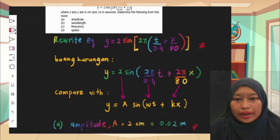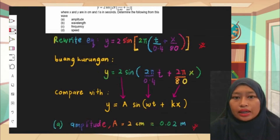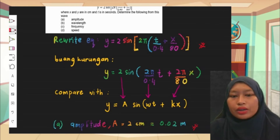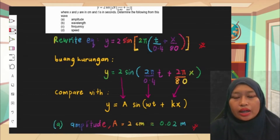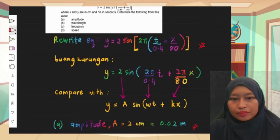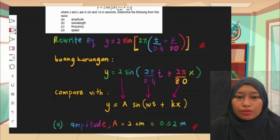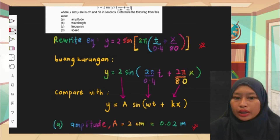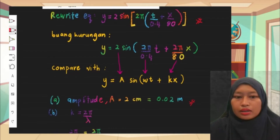We expand the brackets because we want to compare with the general equation y = A sine(ωt + kx). This is the general equation of the wave. It is always easier to compare with the general equation once the brackets are expanded. After comparing, we can directly read off: amplitude A = 2, ω = 2π/0.4, and k = 2π/80.